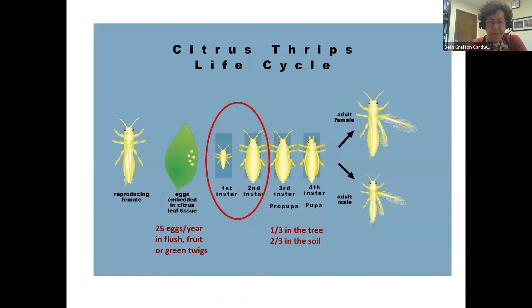So, citrus thrips — here's the life cycle. We've got reproducing females that insert their eggs into leaf tissue, fruit, and mostly fruit and flush. Those eggs hatch after a period of time, and you have the little first instars, which then molt into second instars. Later on, very briefly, they go through a pro-pupa and pupal stage to develop their wings. Citrus thrips have both adult females and adult males. About a third of pupation occurs in the tree itself in cracks and crevices, and about two-thirds in the soil — which is significant during wet years.